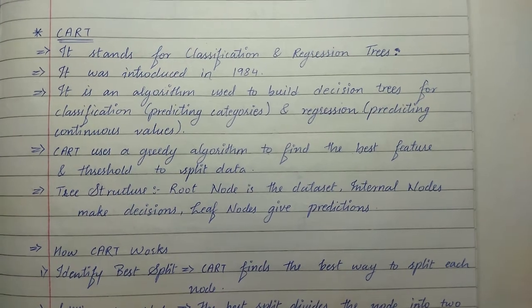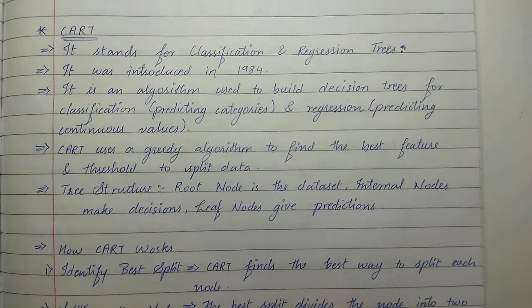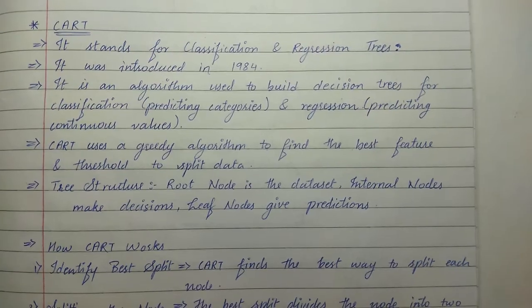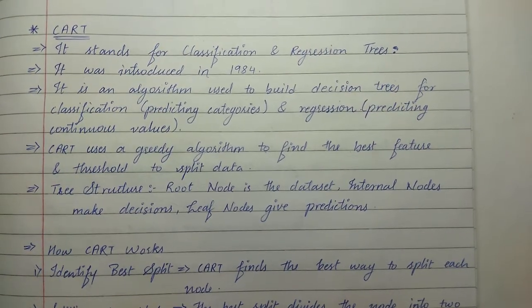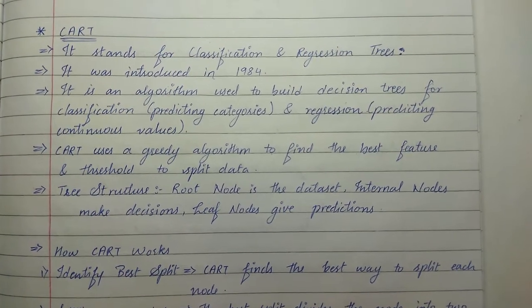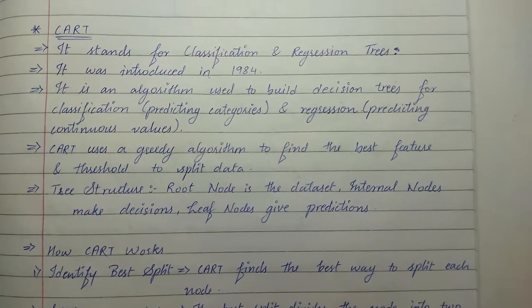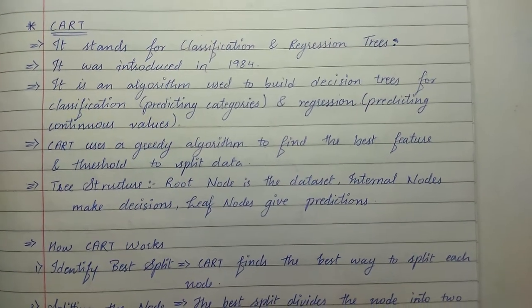Hello guys, welcome back to the channel. Today we are going to see about CART, so CART stands for Classification and Regression Trees. It was introduced in 1984 and it is an algorithm used to build decision trees for classification and regression.